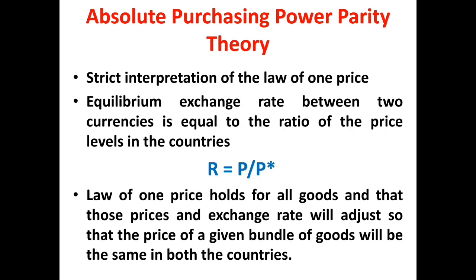The absolute purchasing power parity theory is a strict interpretation of the law of one price. It states that the equilibrium exchange rate between two currencies will be equal to the ratio of price levels in the two countries: R equals P divided by P-star, where R is the exchange rate, P is the general price level in the home country, and P-star is the general price level in the foreign country.